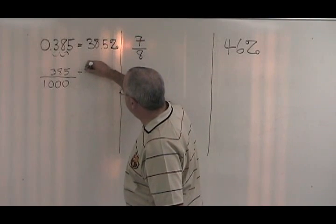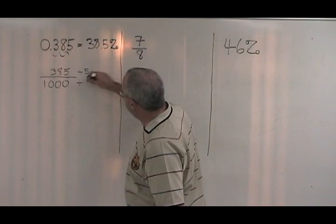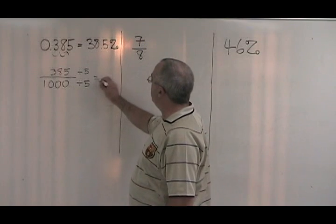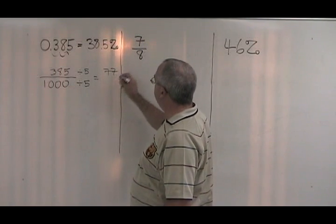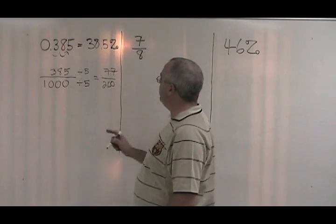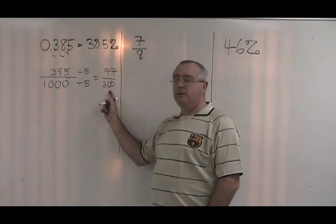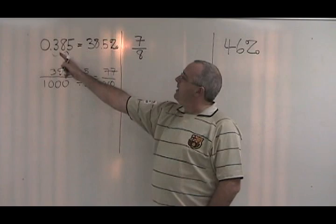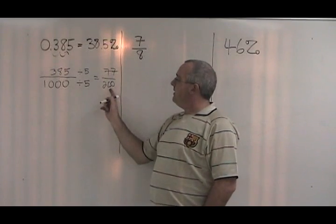If we divide both the top and the bottom by 5, we get 77 on the top and we get 200 on the bottom. This fraction cannot be reduced, so we are finished converting our decimal 0.385 to a fraction.